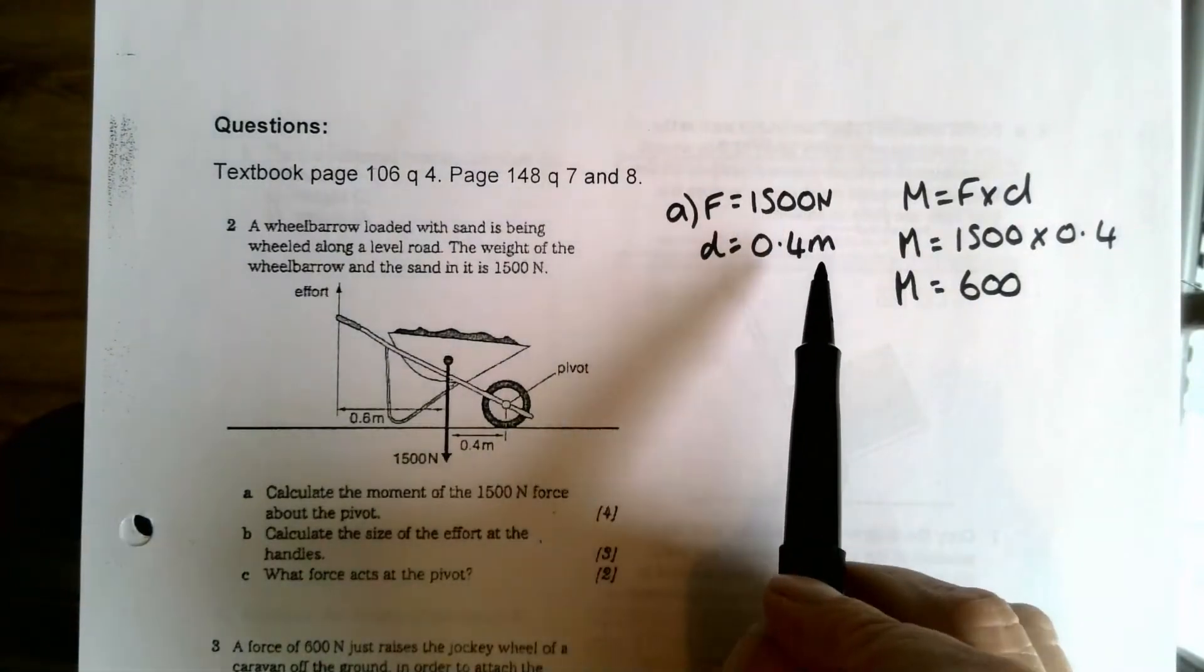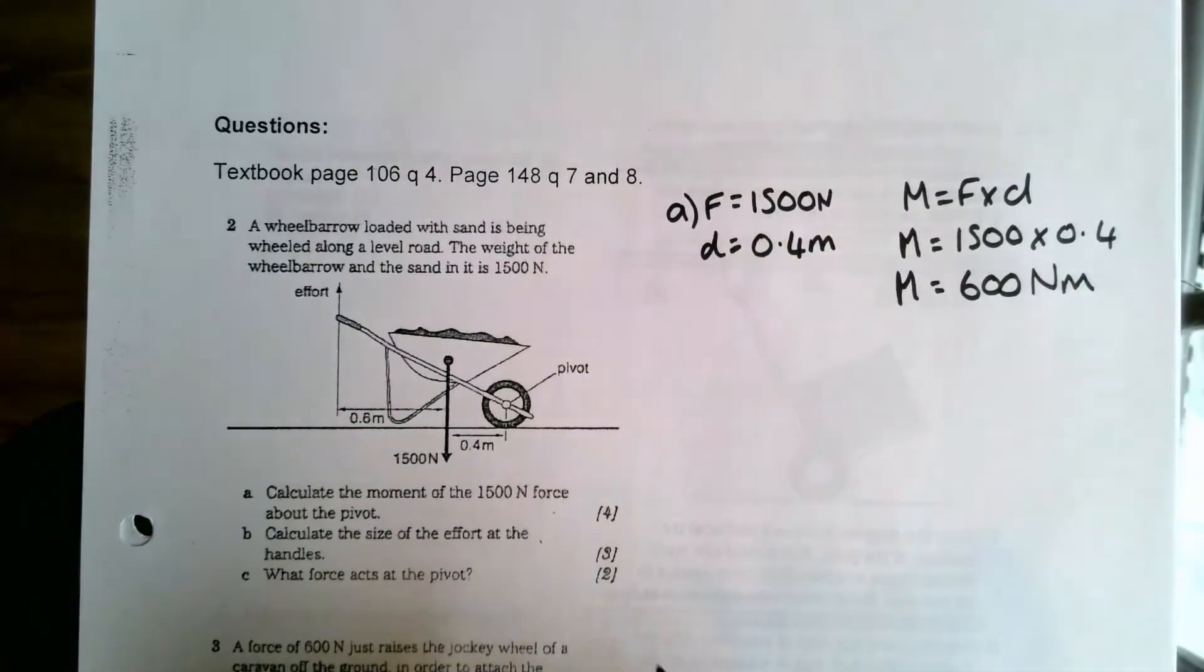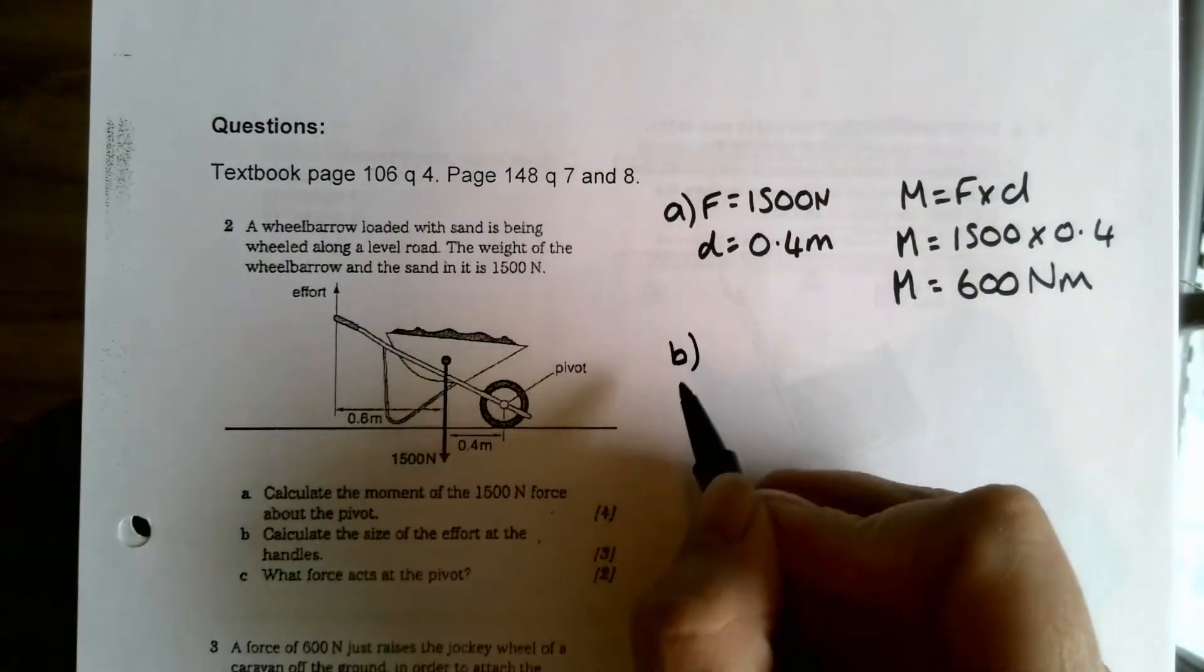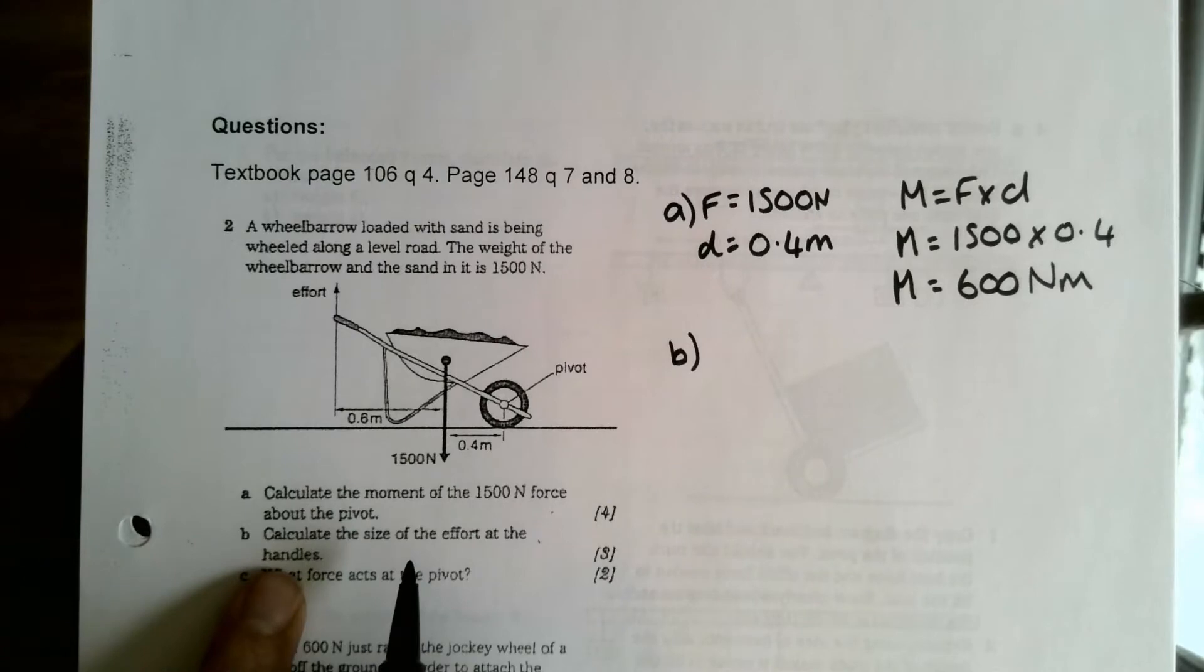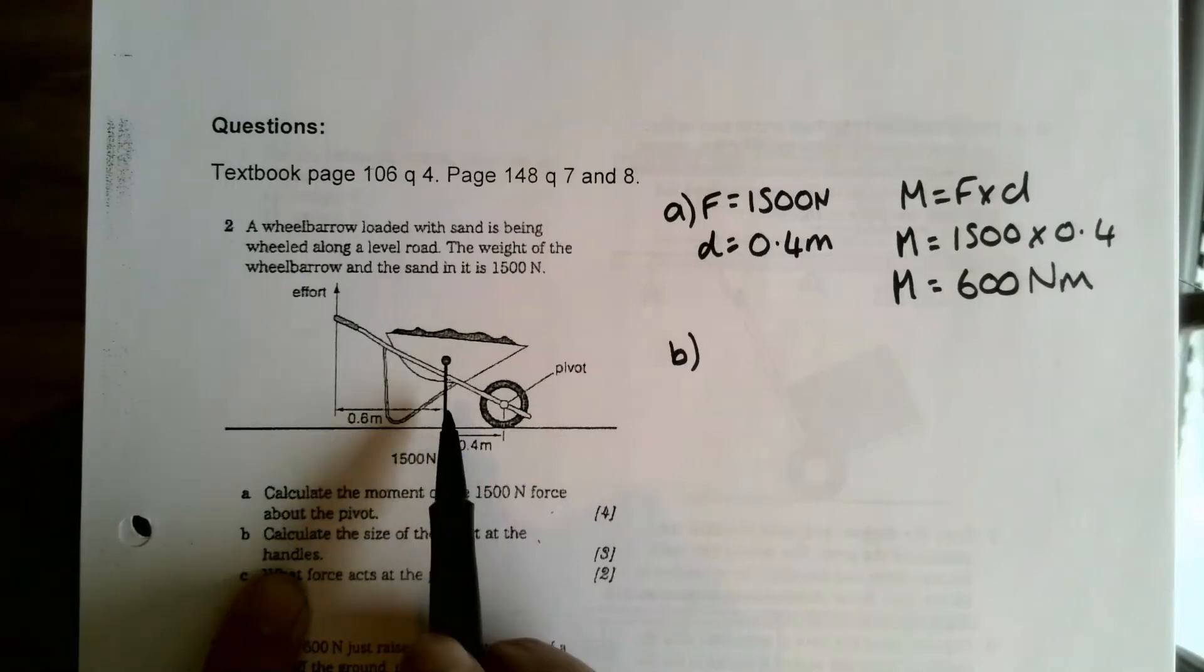1500 multiplied by 0.4 equals 600, and my unit, because force is in newtons and distance is in meters, my unit is going to be newton-meters. So that's straightforward enough. Part b: calculate the size of the effort at the handles.